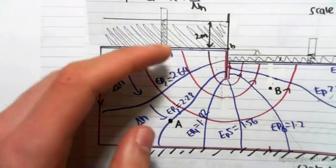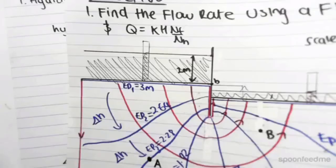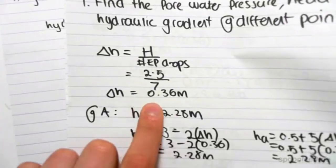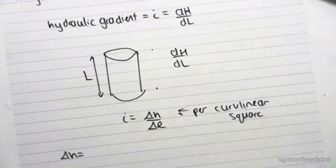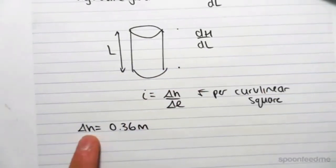So the change in h in every section, from EP to EP, is always the same. We found that in the previous video. We know that the change in h was 0.36, so we've found that already. Change in h is 0.36 meters. This is change in little h.